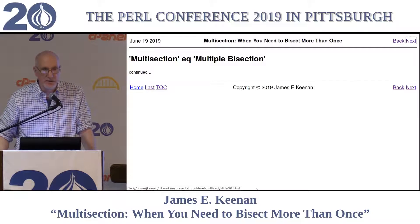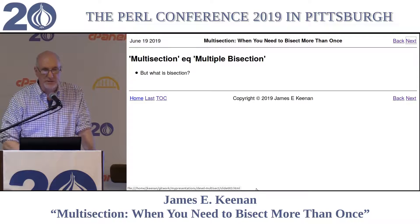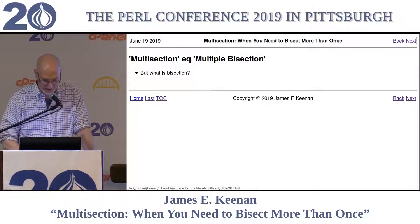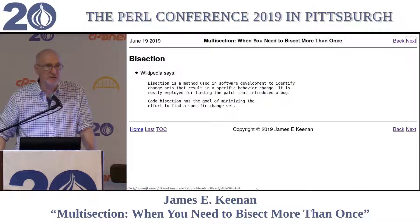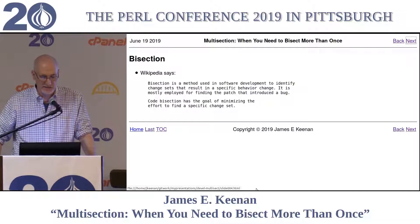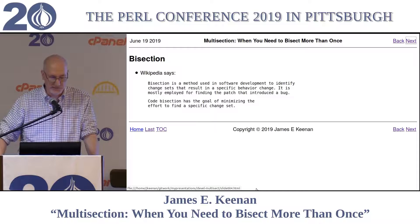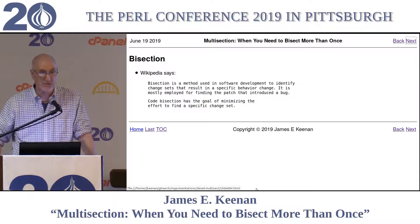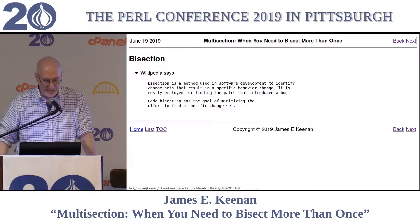Multi-section is, for me, short for multiple bisection. But of course, that raises the question: what is bisection? Wikipedia tells us that bisection is a method used in software development to identify change sets that result in specific behavioral change, mostly employed for finding the patch that introduced a bug. Code bisection has the goal of minimizing the effort to find a specific change set.